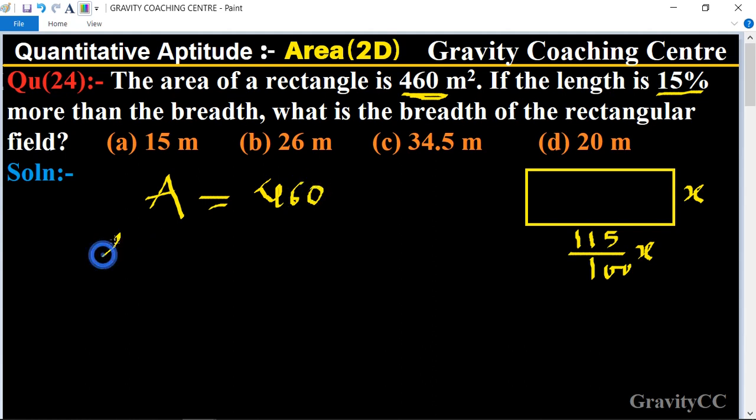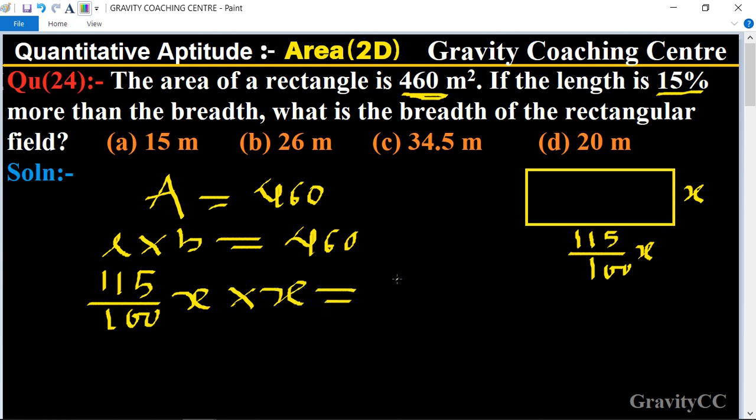the formula of area is length into breadth equal to 460. And length is 115 upon 100 X into X equal to 460, therefore X square equal to